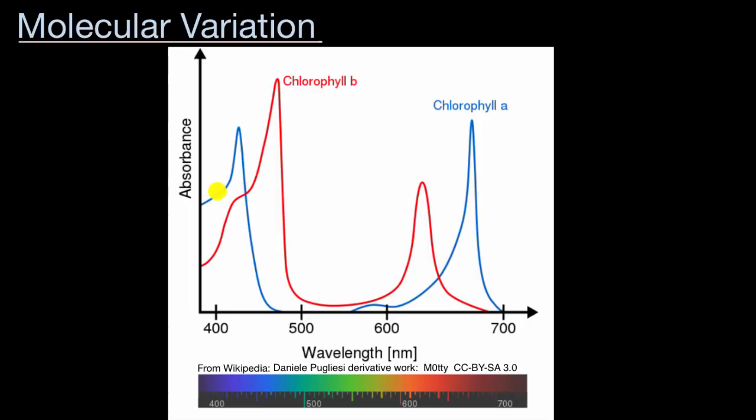So you can see chlorophyll A is really good at absorbing the violet bordering on blue light, while chlorophyll B is better at the blue-green type of light. And then you have another peak here where chlorophyll B is better at absorbing an orangish red, while chlorophyll A is better at absorbing a red bordering on infrared wavelength.